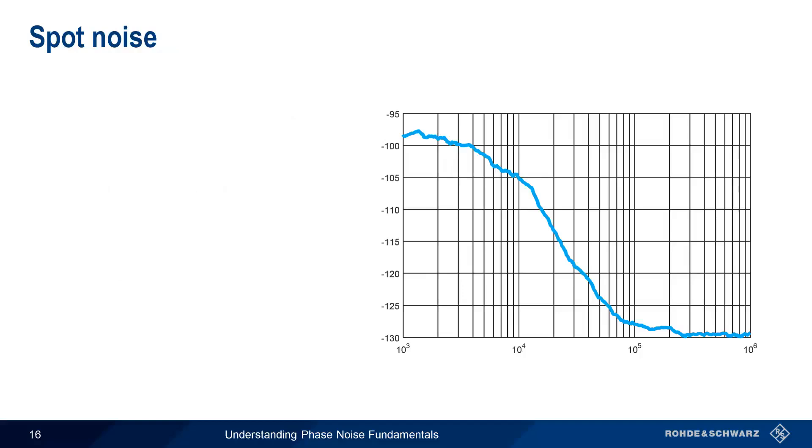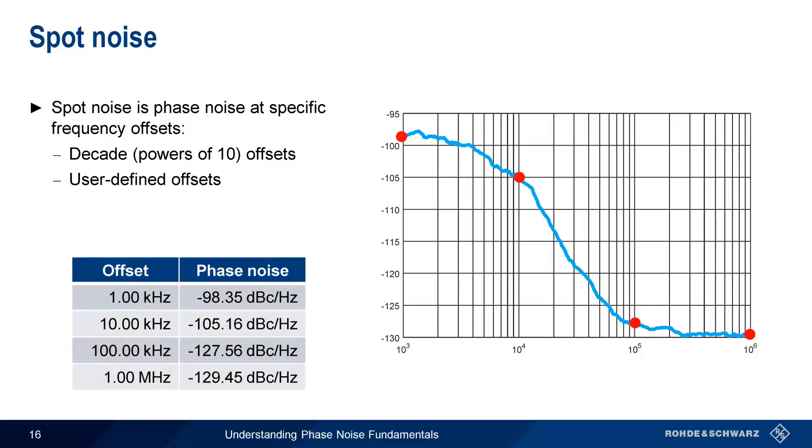In addition to the single sideband phase noise plot that we just looked at, another common way of representing phase noise measurement results is something called spot noise. Spot noise is nothing more than the phase noise measured at specific frequency offsets. By default, these offsets are usually so-called decade offsets, that is, offsets which are powers of 10, such as 1 kHz, 10 kHz, 100 kHz, etc. It's also possible to measure spot noise at arbitrary, user-defined offsets. Spot noise is commonly given in table form, and is most often used to verify that phase noise at a given offset is below a specified threshold.